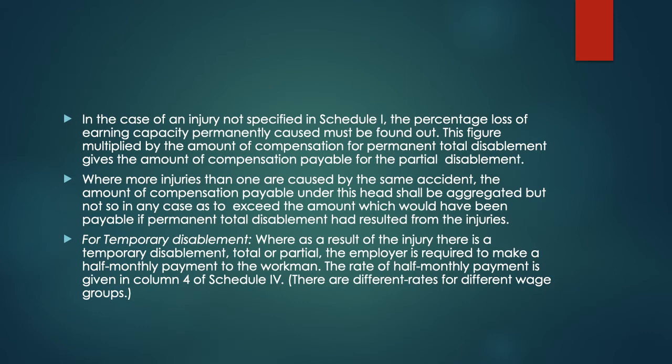For temporary disablement, where as a result of the injury there is temporary disablement, total or partial, the employer is required to make a half monthly payment to the workman. The rate of half monthly payment is given in column 4 of Schedule 4, and there are different rates for different wage groups.